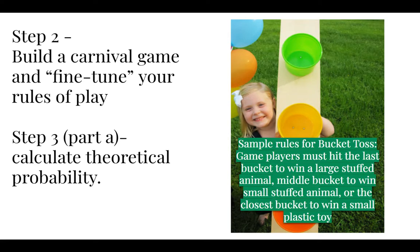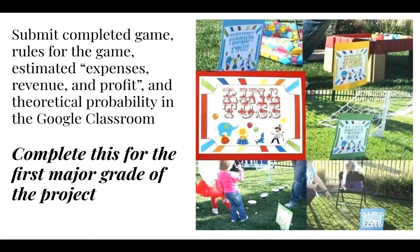Step three, part A: calculate the theoretical probability. You'll use information derived from your game to create the probability that a person will win or lose a specific carnival game, or if you have multiple prizes, the probability of winning that specific prize. You'll submit the completed game, rules, estimated expenses, revenue, profit, and theoretical probability in Google Classroom. This is the first major grade of the project.